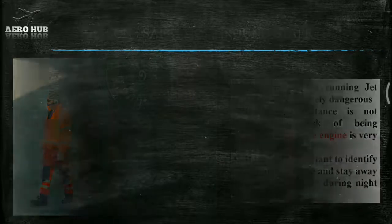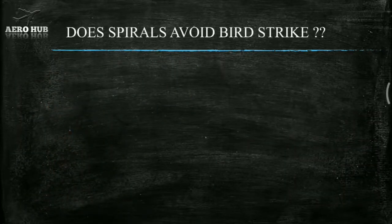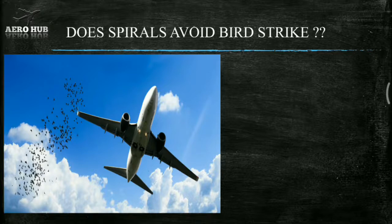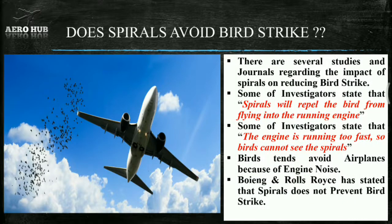This is the major reason behind the spiral markings on the engine. Do spirals avoid bird strike? There are several studies in journals regarding the impact of spirals on reducing bird strike. Some investigators state that spirals will repel birds from flying into the running engine. Some investigators state that the engine is running too fast, so birds cannot see the spirals. Birds tend to avoid airplanes because of engine noise. Boeing and Rolls-Royce have stated that spirals do not prevent bird strike. Therefore, the main reason behind spirals is for the safety of ground staff.